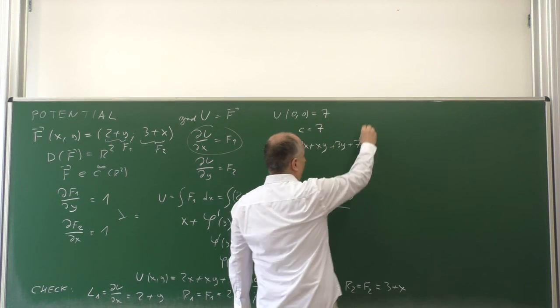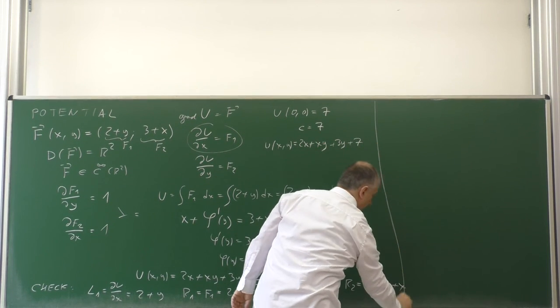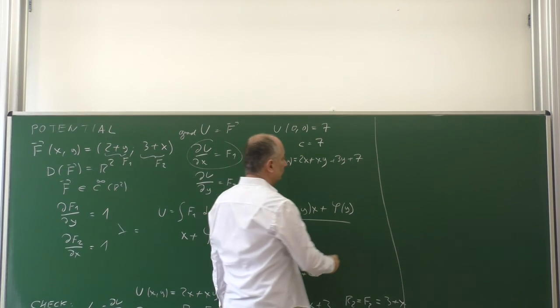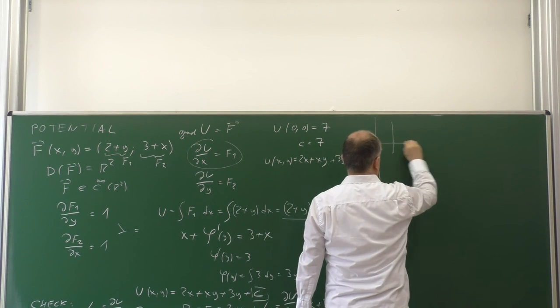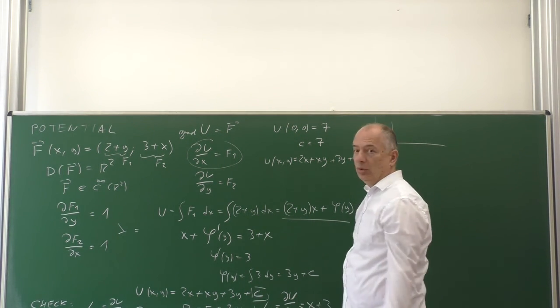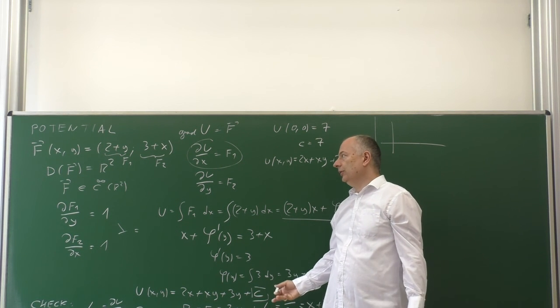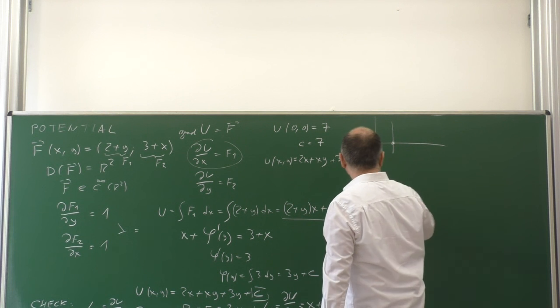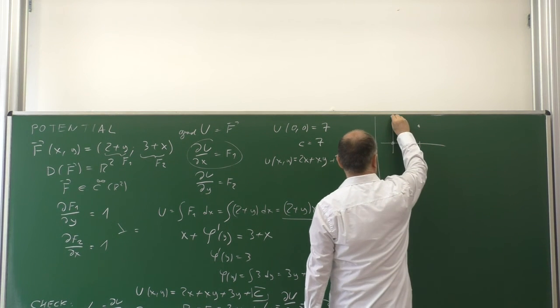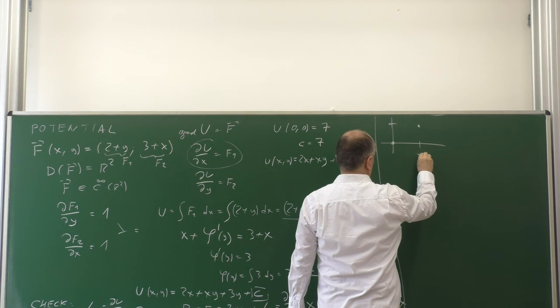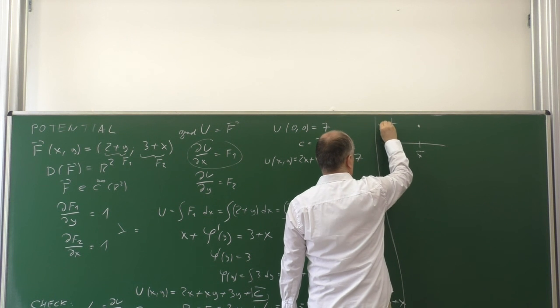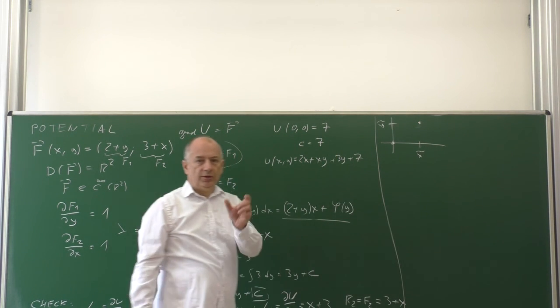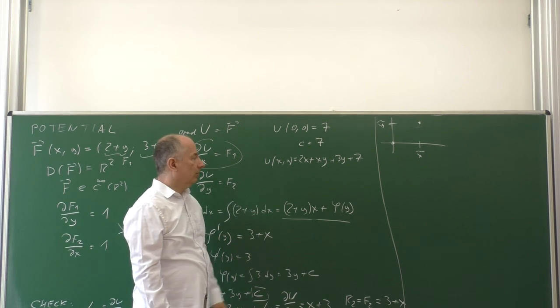The second way is we can use line integral. We start at some convenient point, which is often origin if possible, and then we go to some general point with coordinate, let's denote it x tilde, y tilde. Because we will need x and y for the points on the way.